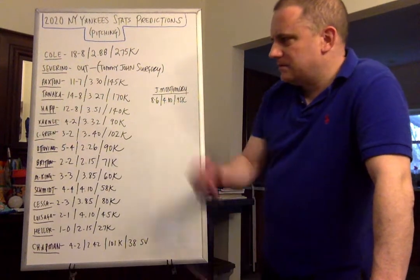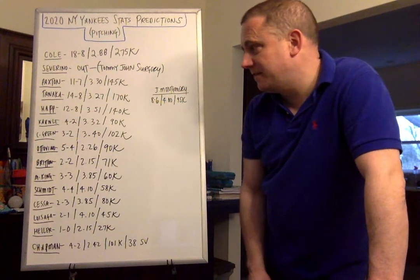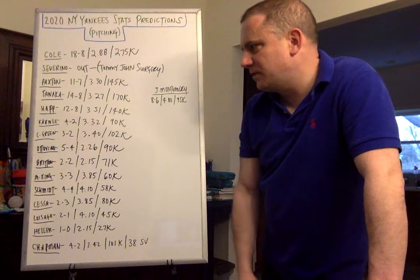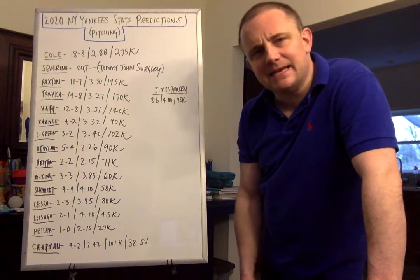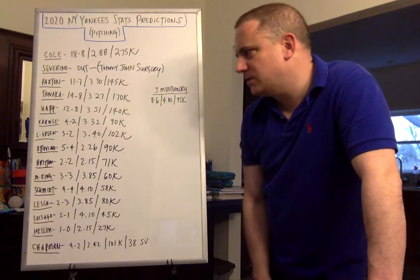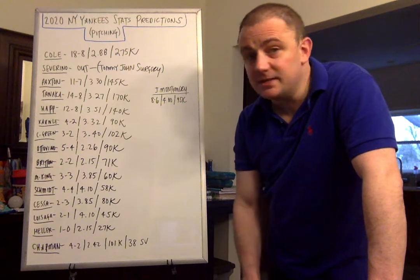Tommy Kahnle, fan favorite, 4-2 record with a 3.32 ERA and about 90 Ks. He's another one of those dominant right-handers in the bullpen. When he's on, he's on. He's money.